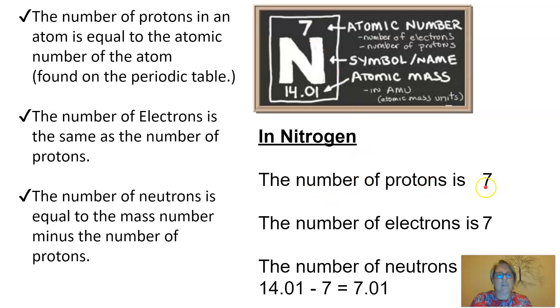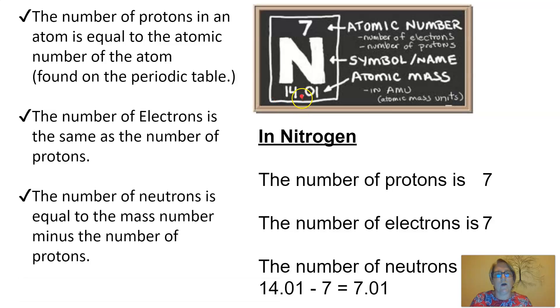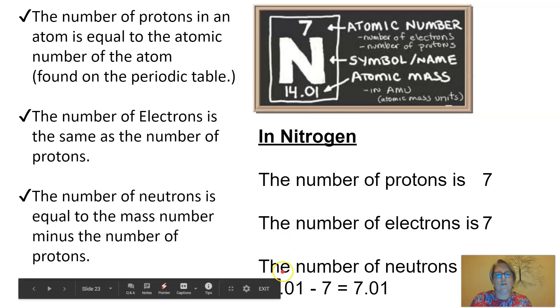In the case of nitrogen, as an example, the number of protons is 7, which we get from the atomic number. The number of electrons is 7, which we get from the atomic number. And the number of neutrons is 7.1. We get that by taking the atomic mass number, which is 14.1 and subtracting 7. So 14.1 minus 7 gives us 7.01.